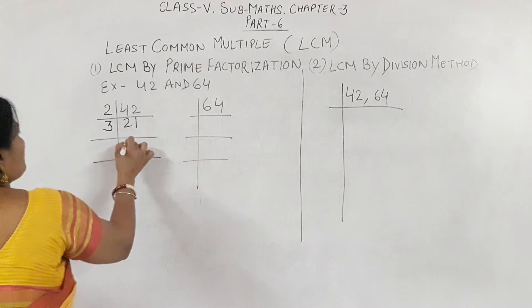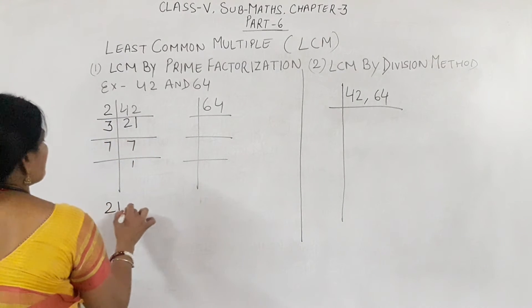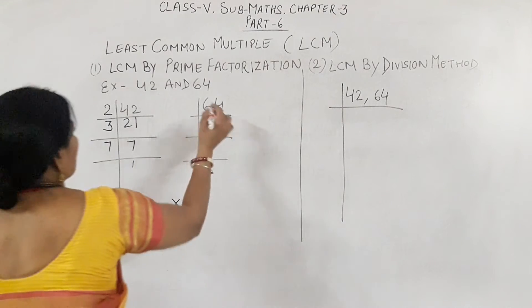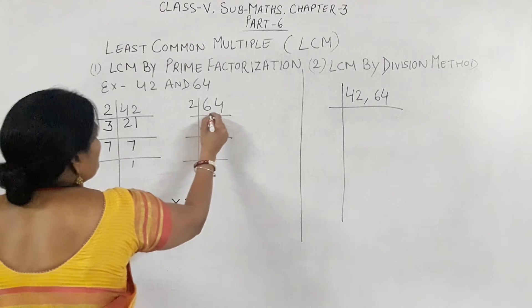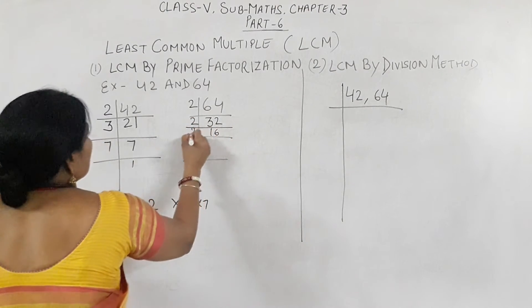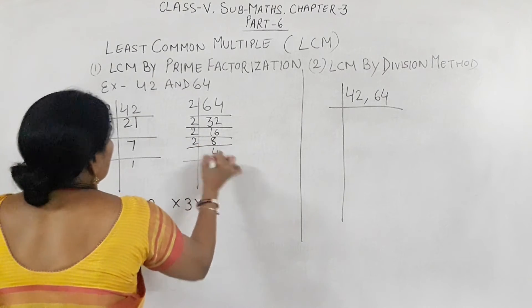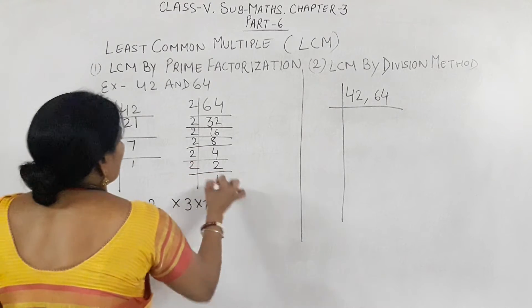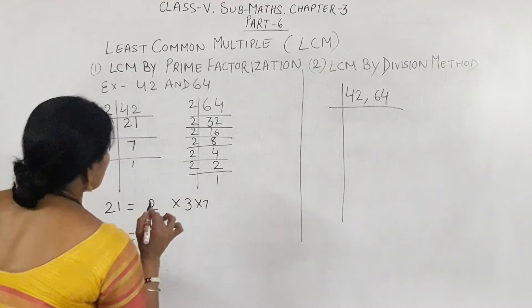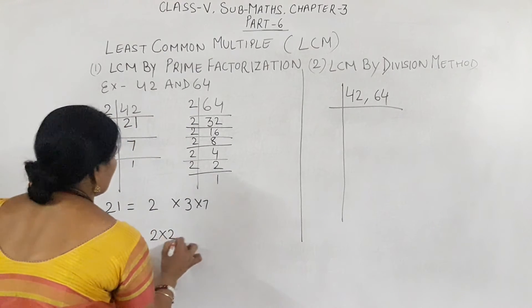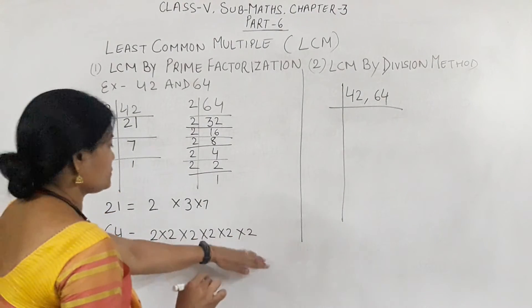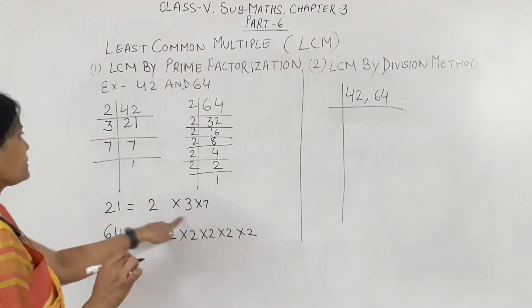Now for 64: it is an even number, so divide by 2 to get 32, then 16, then 8, then 4, then 2, then 1. So 64 equals 2 multiplied six times — that is 2 to the power of 6. So we have the prime factors of 64 and the prime factors of 42.